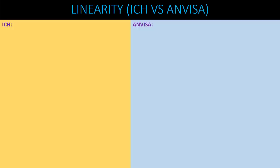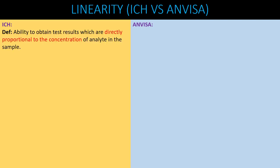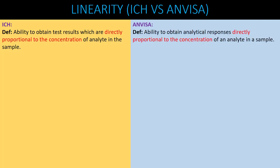Let us first understand the definition of linearity as per ICH and ANVISA. ICH defines linearity as the ability to obtain test results which are directly proportional to the concentration of the analyte in the sample. ANVISA similarly defines it as the ability to obtain analytical responses directly proportional to the concentration of an analyte in a sample. There is no significant difference between the two definitions.